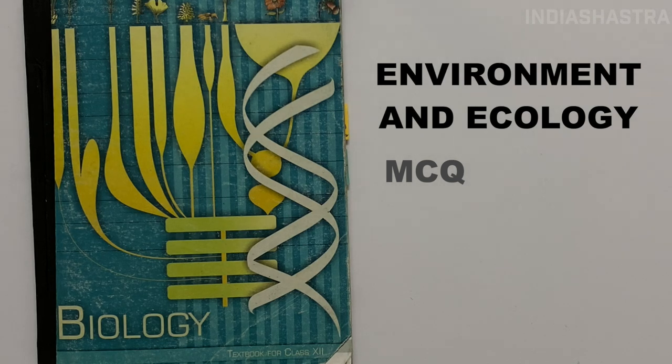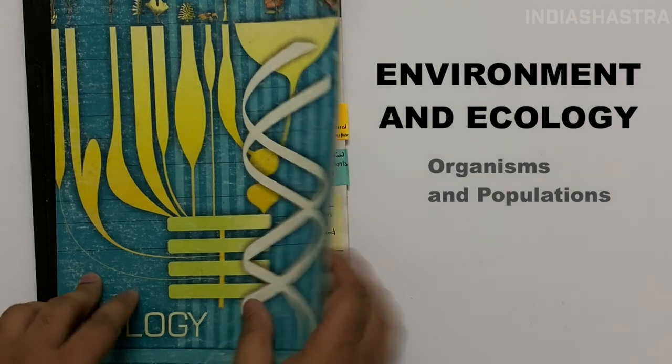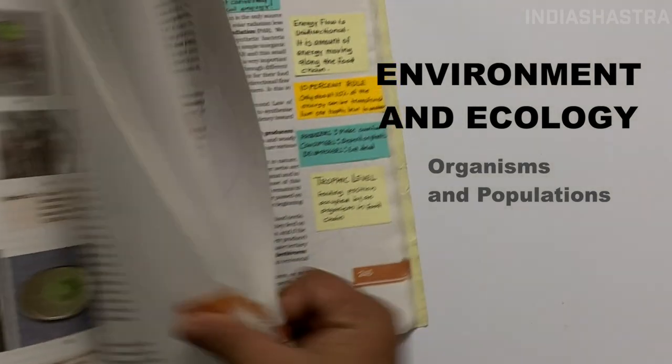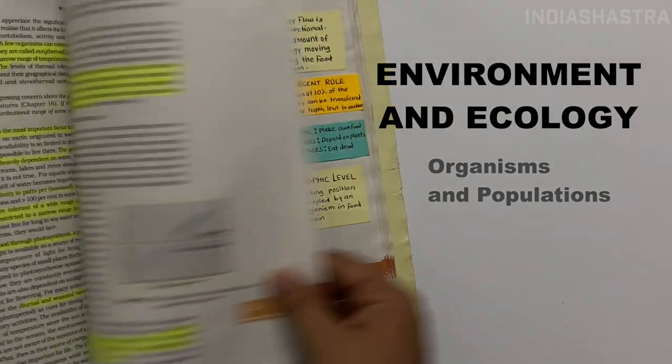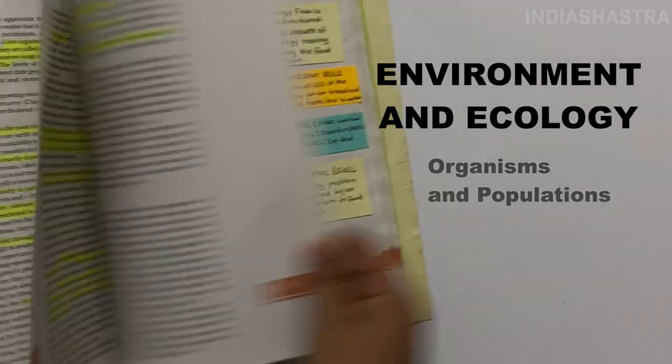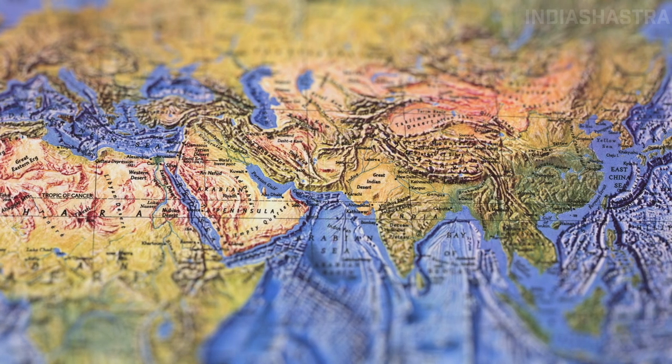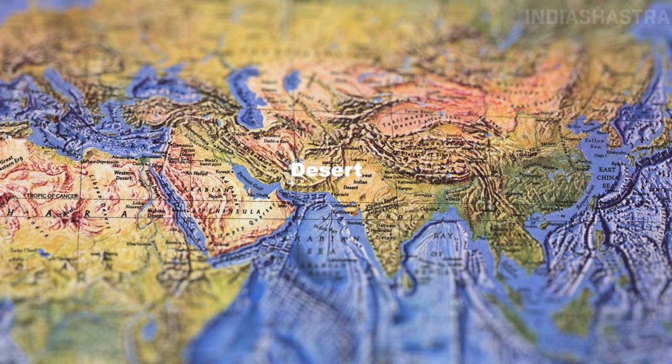In this series, we will revise Organisms and Population in detail with the help of notes in under 30 minutes. Similarly, we can cover the next 3 chapters as well. So without further ado, let us begin.